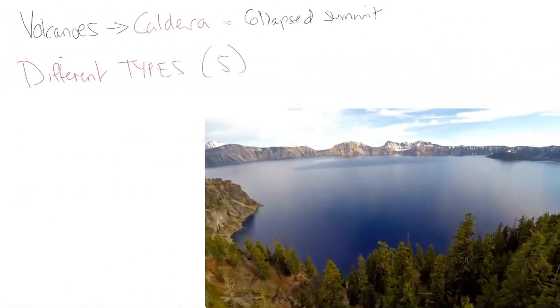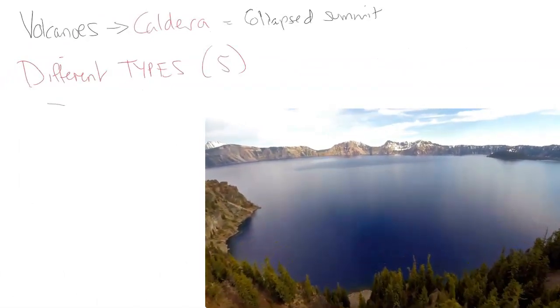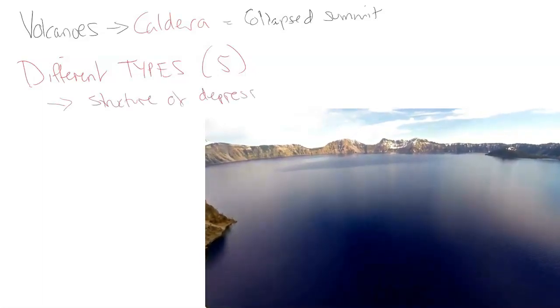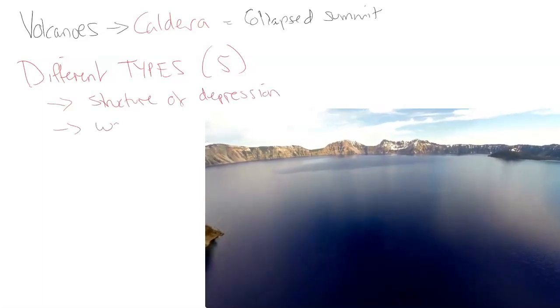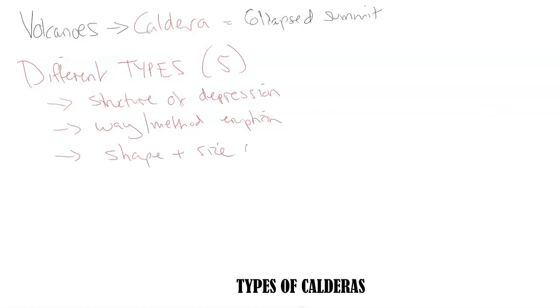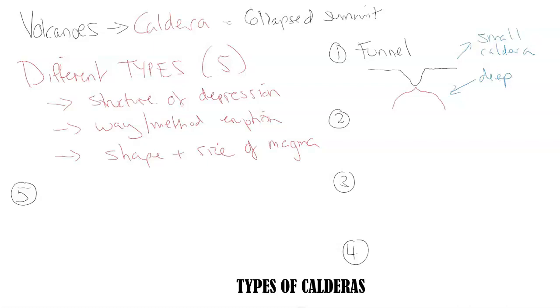Now when we talk calderas, there are five main types of calderas, and they are the different types, basically. And obviously the structure of the depression can change. The way or the method of eruption can change. Shape and the size of the magma chamber in which the rocks are going to fall into would change, and obviously create a different type. The five types are going to be this. First you've got the funnel. So this is a, the red is the magma chamber, so it's deeper magma chamber, deeper in the crust of the lithosphere, and also you've got a smaller caldera. So based on how deep it is, if it's deeper, then it will fall less in, or size as well would affect this, and it forms this funnel type of a caldera. So it's not very wide, it could be deep.